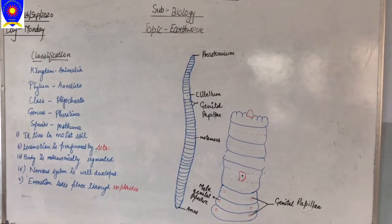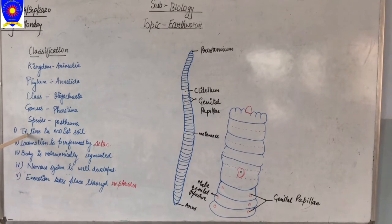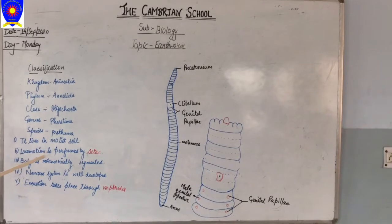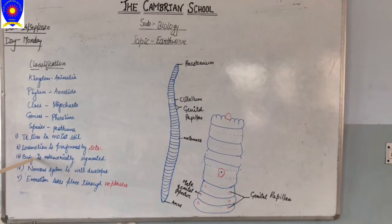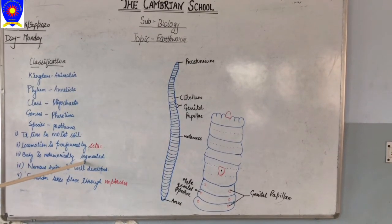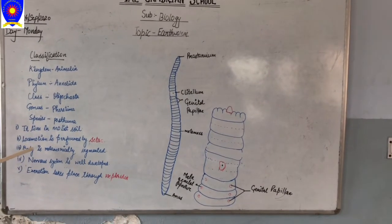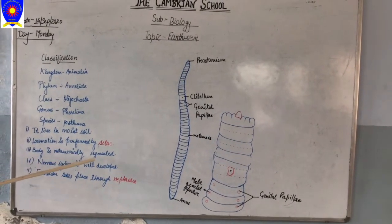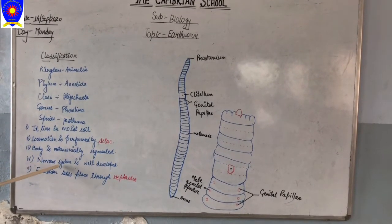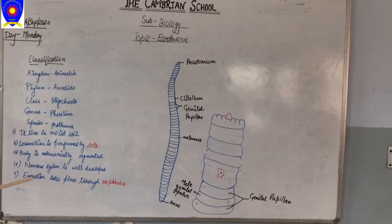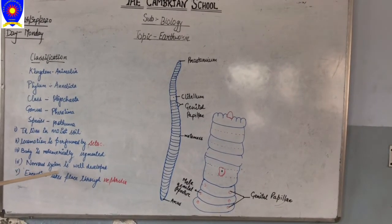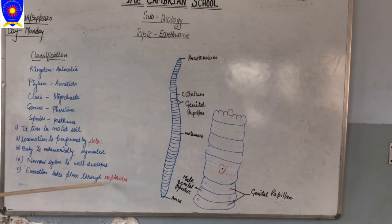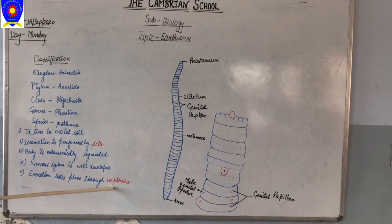If I talk about the general comments, basically the earthworm lives in moist soil. They use setae for locomotory purposes. Their body is metamerically segmented, meaning the divisions which appear on the outside of the body also exist inside. The nervous system is well developed — they have ganglia that form their nervous system. For excretion, it takes place through an excretory organ known as nephridia.